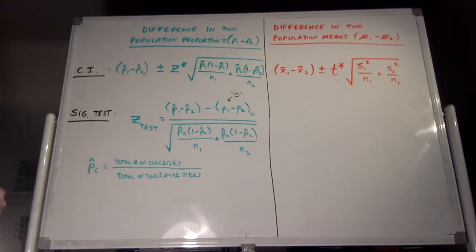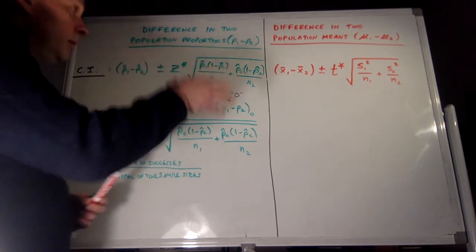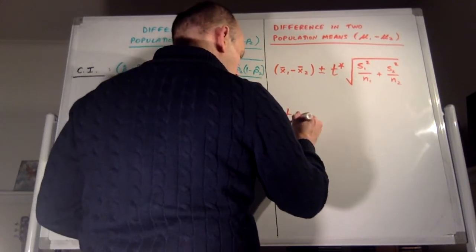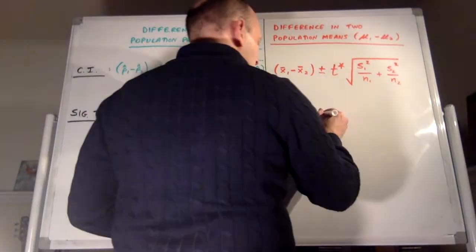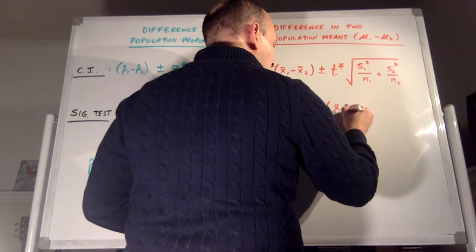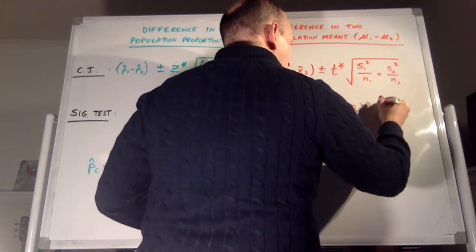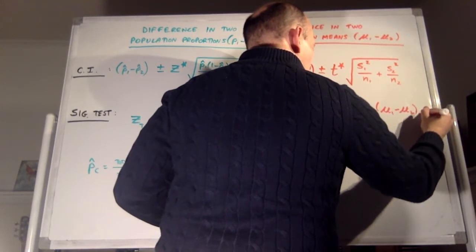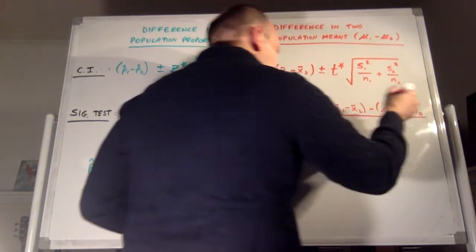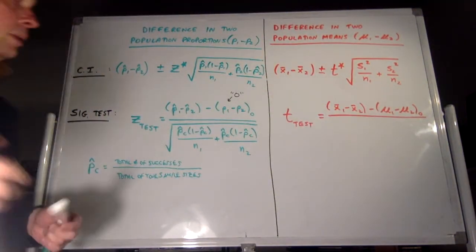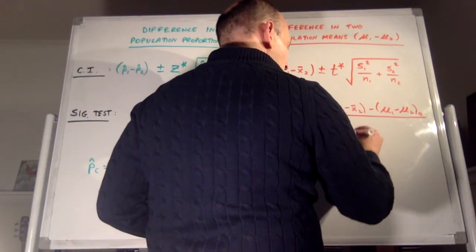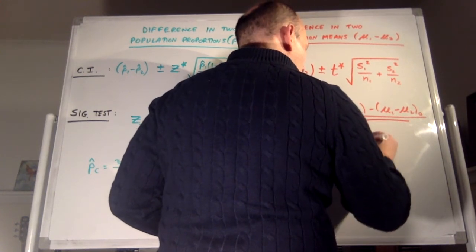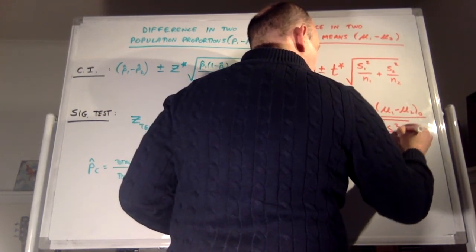That's what the standard error is when you calculate your z-test statistic for a significance test for the difference in two proportions. Now for means, this is going to be a t-test statistic — t goes with x-bars. Our t-test statistic is the estimate, x-bar 1 minus x-bar 2, minus our hypothesized mu1 minus mu2 naught (which typically will also be zero, although we've seen an example in the homework where it wasn't). Over the standard error: the square root of s1 squared over n1 plus s2 squared over n2.